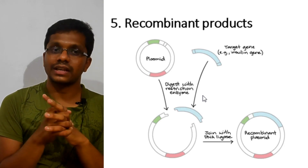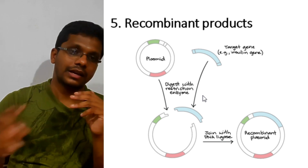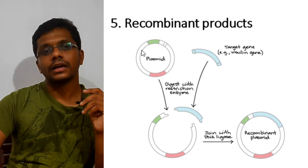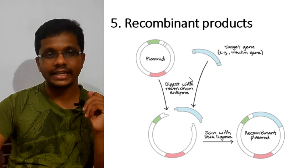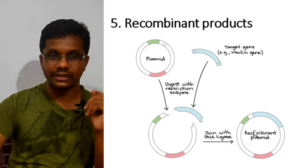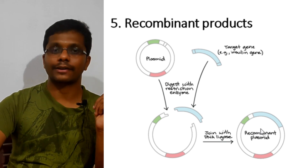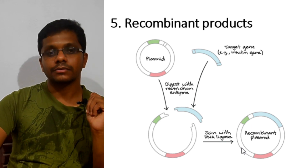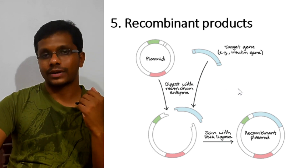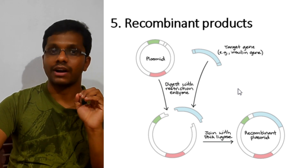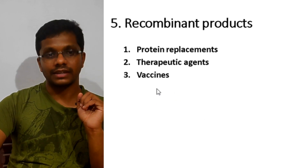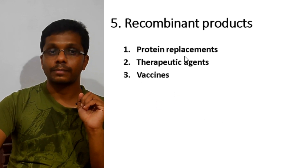The next category is recombinant products. In recombinant DNA technology, DNA from two different sources is combined into a single recombinant DNA not naturally found in nature. Using this technology, we can produce a variety of proteins easily. Most recombinant DNA products are high-value, low-volume products used in the pharmaceutical industry, where they are used in three main ways.